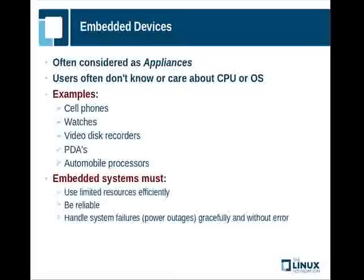Embedded devices are often considered as appliances. What we mean by that is that users either don't know or don't care in most circumstances what operating system is actually running the device, and they don't care about the actual central processing unit used on a device and are unlikely to even know about it. Common examples, of course, include cell phones — there are more instances of Linux on cell phones than anywhere else.